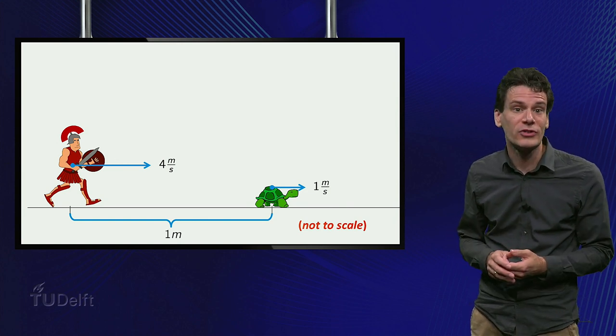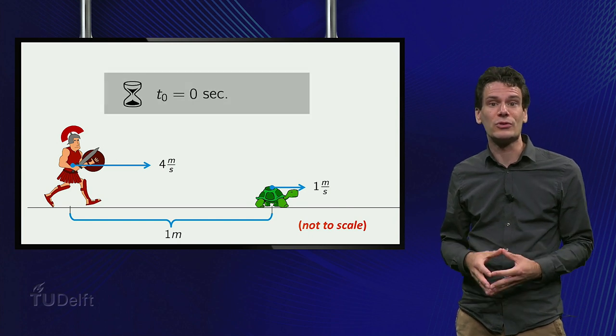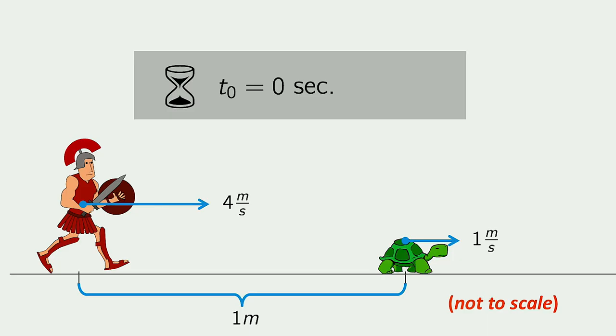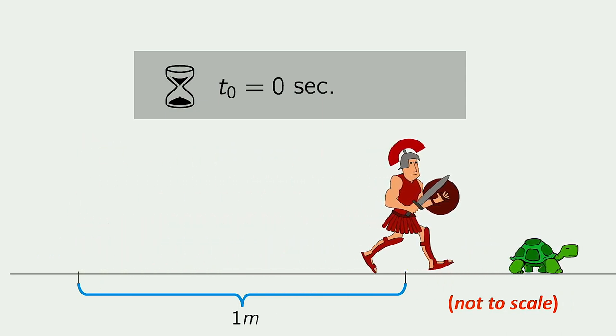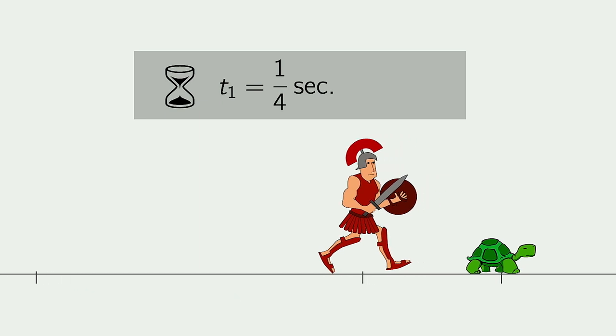Let's also keep track of time elapsed after each step. We start at t0 equal to 0. First, Achilles will run 1 meter. This takes a quarter of a second, so t1 is equal to 1 over 4.